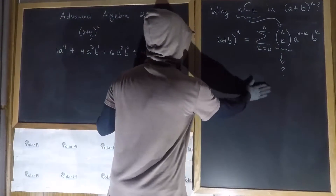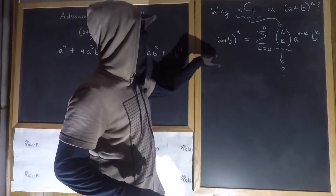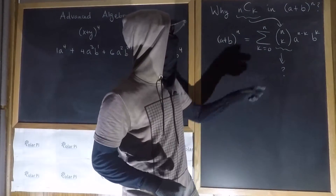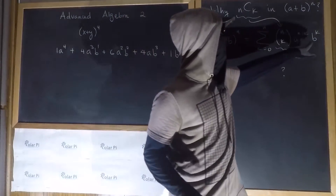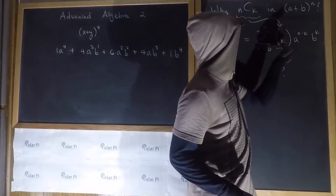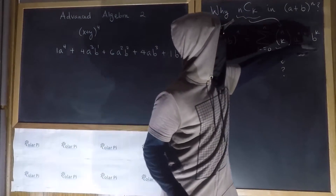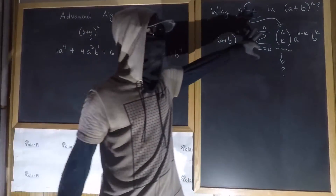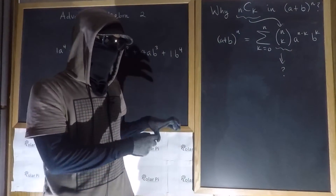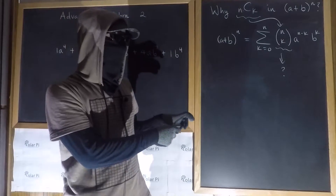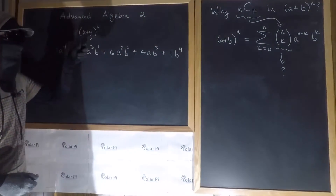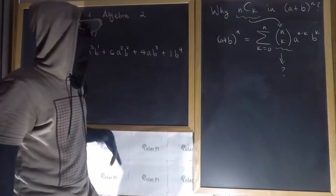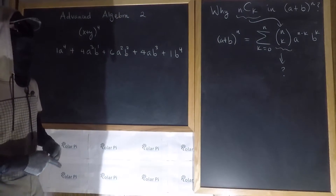If we look at the binomial theorem, we have a clue as to why n choose k is there. Notice that k is an exponent on the b. So in each term, what the n choose k is doing is figuring out how many b's — or how many y's — to choose out of n possible x's and y's. I'll be more specific with an example.